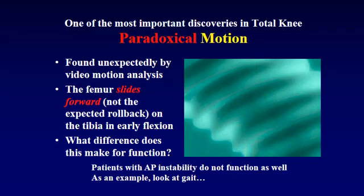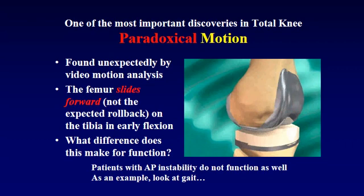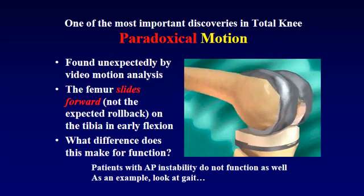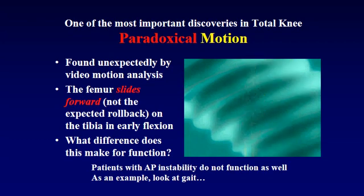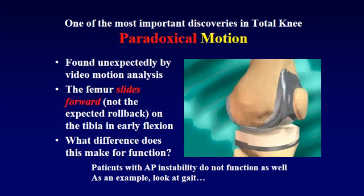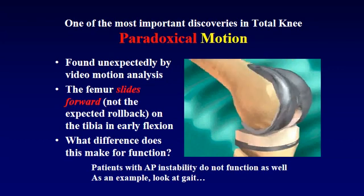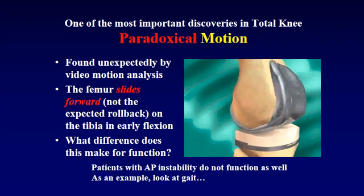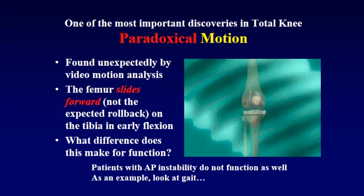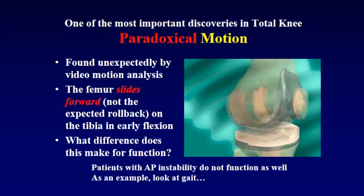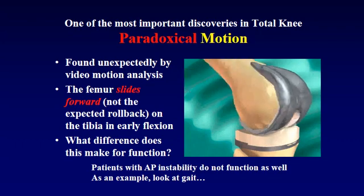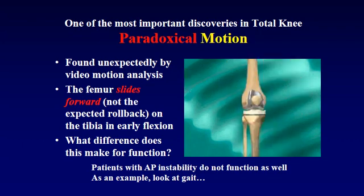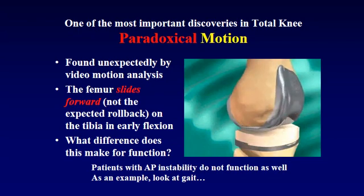Paradoxical motion is a type of motion that was found first by Comestec and Dennis doing video fluoroscopy. It was an unexpected finding because they believed that these posterior cruciate retaining knees should roll back as the knee joint flexed. They believed that the posterior cruciate ligament should keep the femur backwards on the tibia, very much as suggested by the four-bar link model. When the femur in fact slid forward, as you see in the video, this was to them a paradox, and so it was called paradoxical motion.